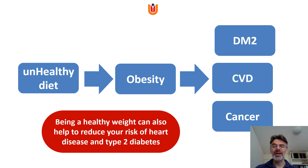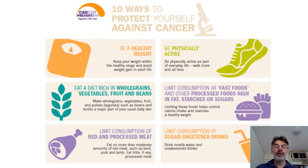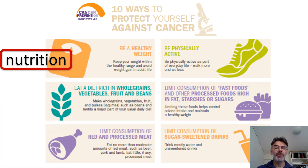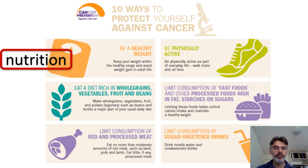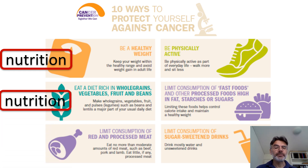Even if there is less evidence for a certain nutrient or food component for cancer prevention, there may still be sufficient evidence from other diseases to justify dietary changes. Looking at the 10 ways to protect yourself against cancer on the World Cancer Research Fund website, the first is maintaining a healthy weight, and many others are nutrition- or diet-related: eating more whole grains, vegetables, fruit and beans is the second recommendation.